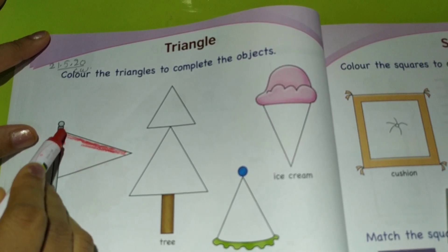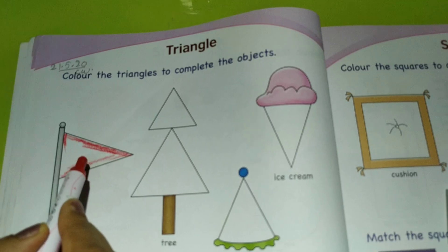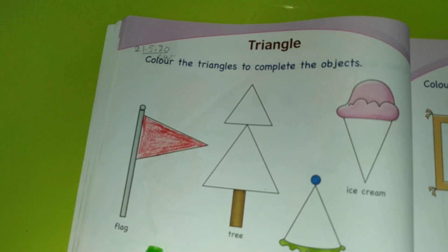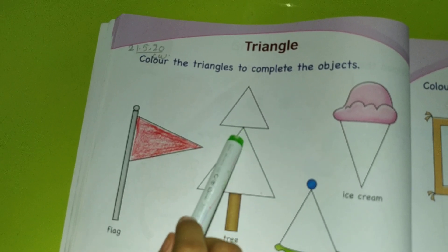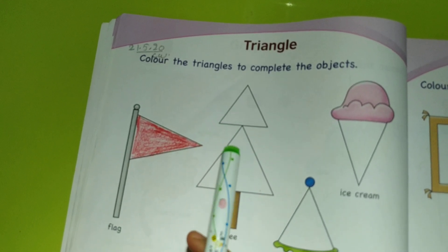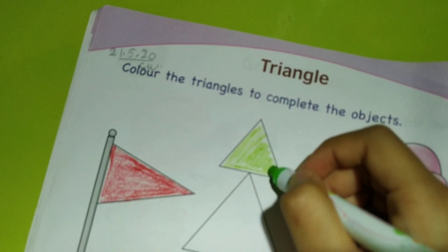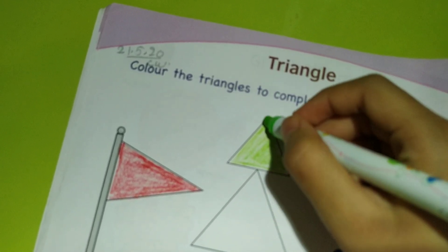Next is tree, so we are going to color the tree. Which color is tree? We will color it with green. So this is what we are coloring with green color. See that the color doesn't go outside the line.